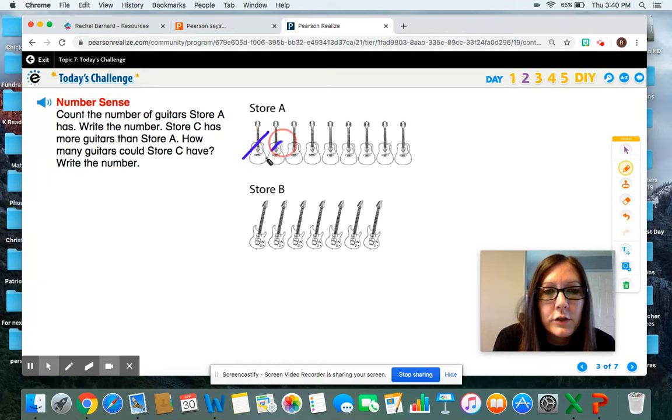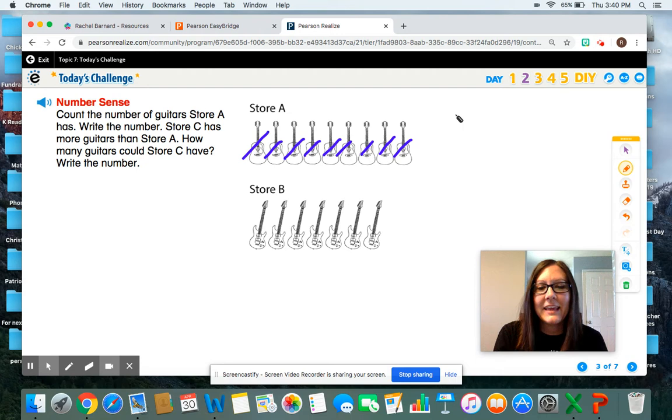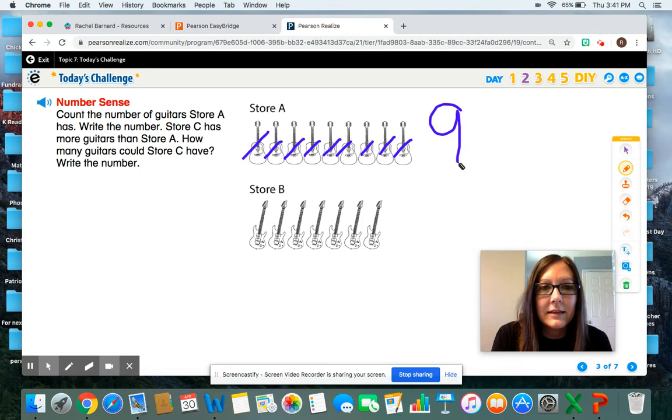One, two, three, four, five, six, seven, eight, nine. We knew that from counting them yesterday. Store A has nine guitars.